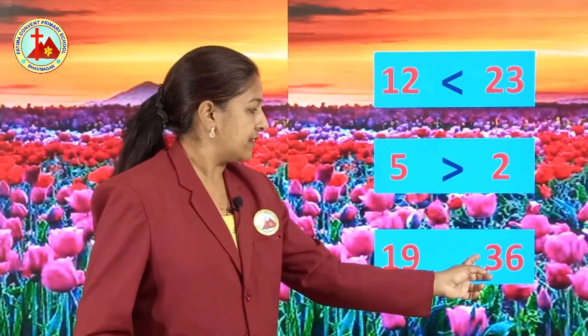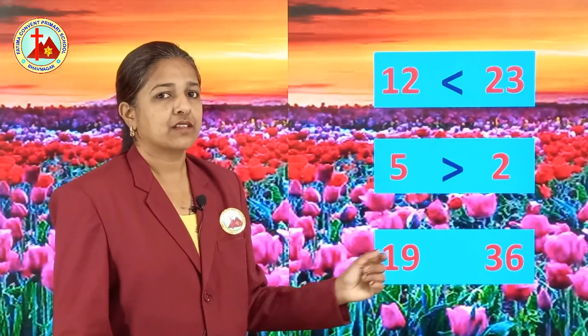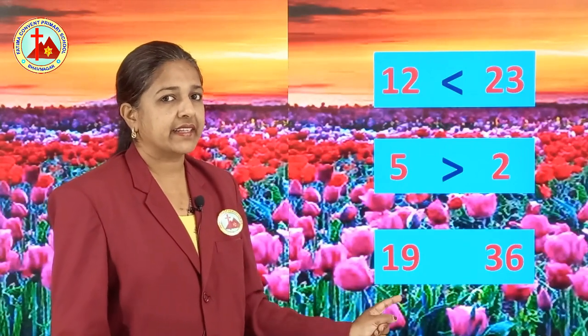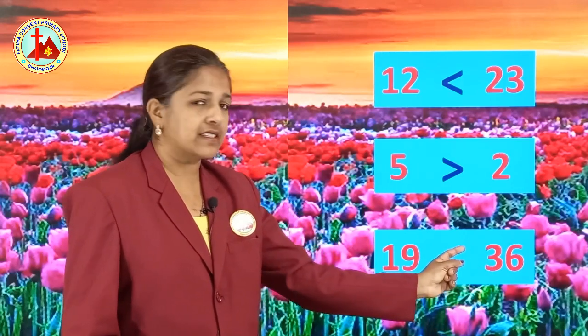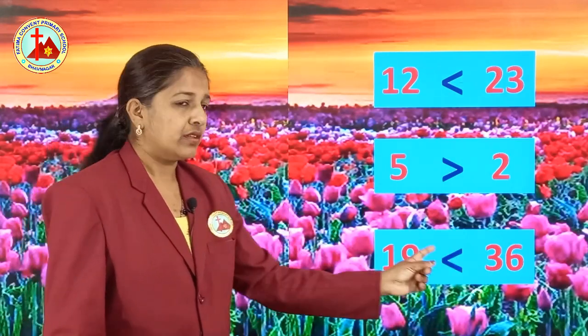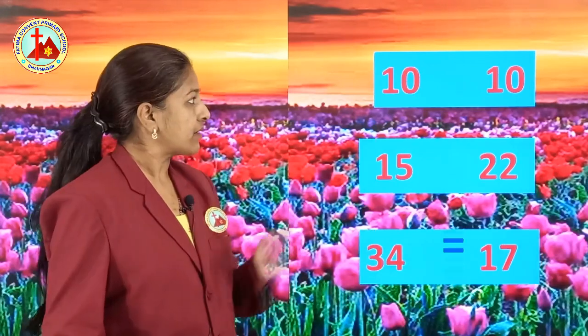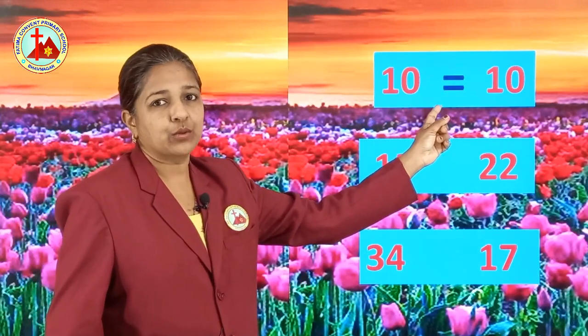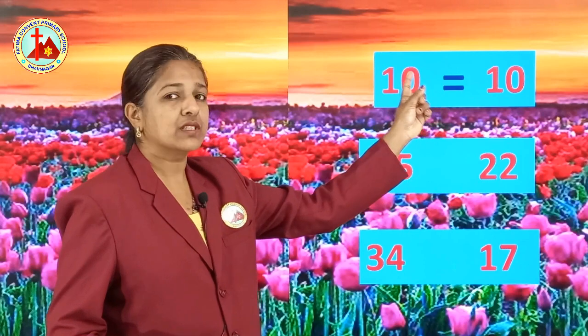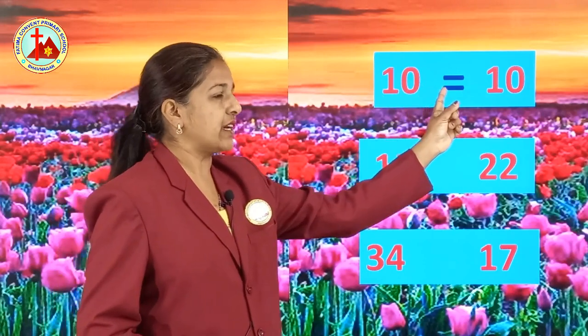Next, 19 and 36. 19 is lesser than 36. 36 is the greater number. So this sign we have to put — mouth open sign. Next, 10 and 10. Both the sides numbers are equal, so equal to sign. 10 is equal to 10.